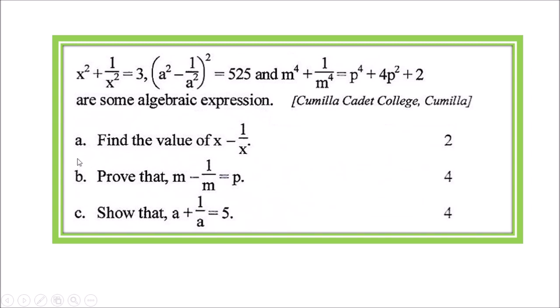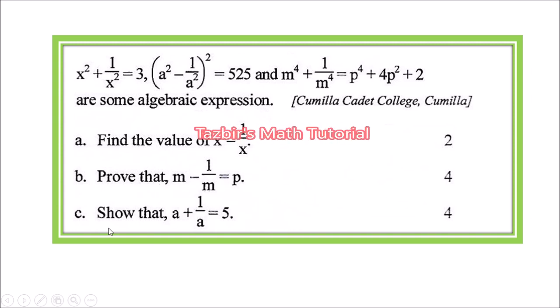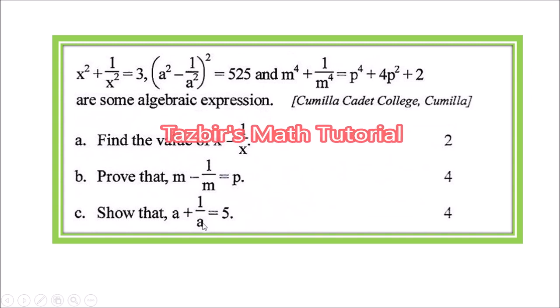Part (a): Find the value of x - 1/x. Part (b): Prove that m - 1/m = p. Part (c): Show that a + 1/a = 5.